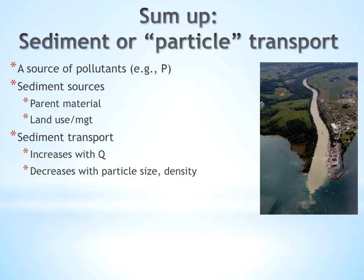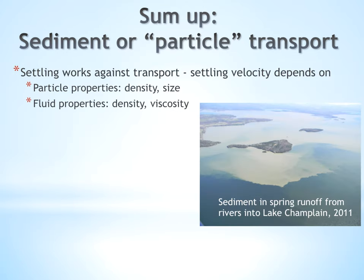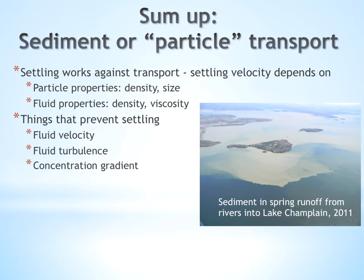To sum up particle transport: sediment is a source of pollutants, and sediment sources vary based on parent material like granite versus sandstone, or land use and management practices such as forests or cover crops. Sediment transport increases with river discharge and velocity, and decreases with particle size and density. Particle settling depends on particle properties — density and size — and fluid properties — density and viscosity. Forces that prevent settling include fluid velocity, fluid turbulence, and the concentration gradient.